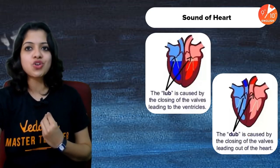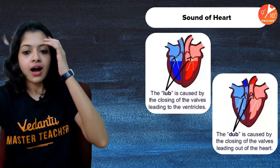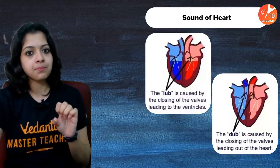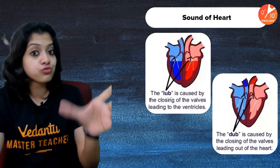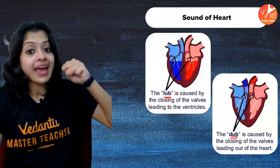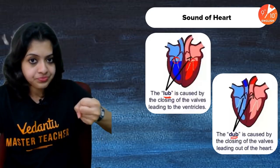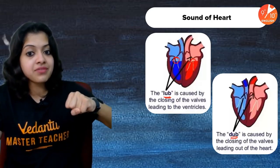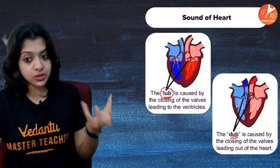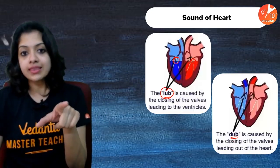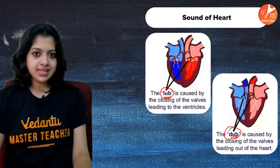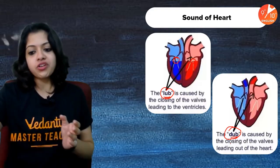If you listen to your heart through a stethoscope, you hear a 'lub-dub' sound. The 'lub' sound is caused by the closure of the atrioventricular valves when the ventricles fill with blood and the AV valves close. The 'dub' sound is caused by the closure of the semi-lunar valves — at the entrance of the pulmonary artery and the aorta — when blood is expelled out of the heart.